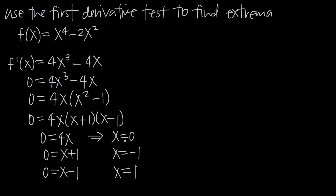A critical point is a point at which the function changes direction. If the function is increasing and then hits a critical point, it'll start decreasing, or vice versa. But we can't conclude that these three values are in fact critical points until we've used the first derivative test to test them.